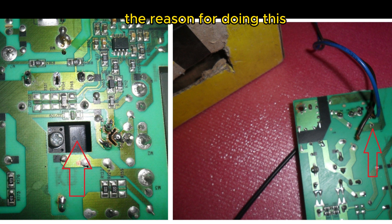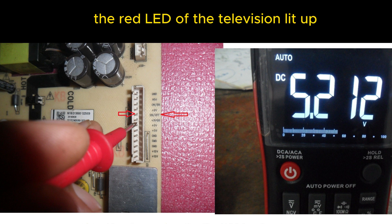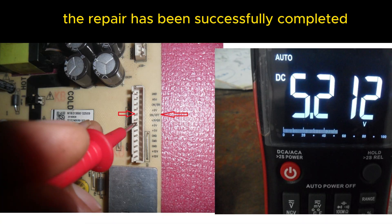The reason for doing this is the power repair video I did earlier. When the electricity was put in this way, the red LED of the television lit up and the 75W bulb went out, which means that according to this observation, the repair has been successfully completed.